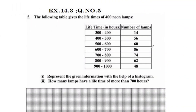Hello everyone, welcome to this video. Welcome to exercise 14.3, question number 5. The following table gives the lifetimes of 400 neon lamps. The lifetime 300 to 400 hours corresponds to 14 lamps, and 400 to 500 hours corresponds to 56 lamps.